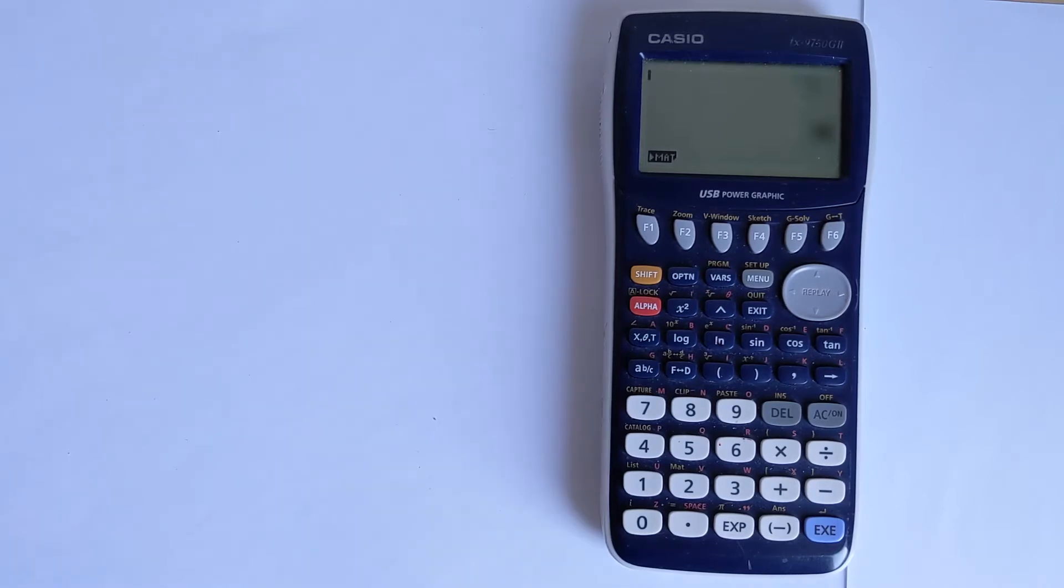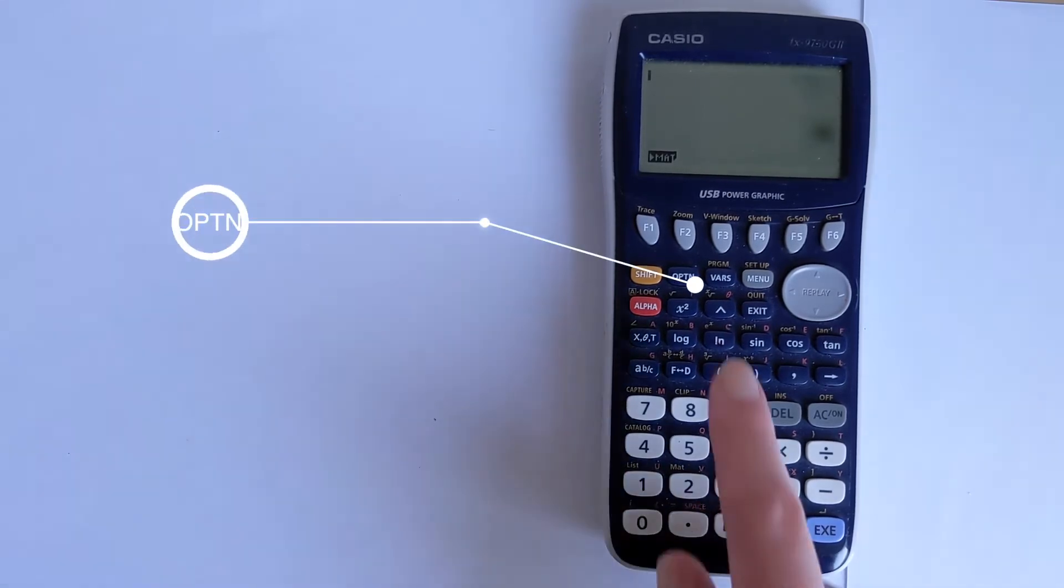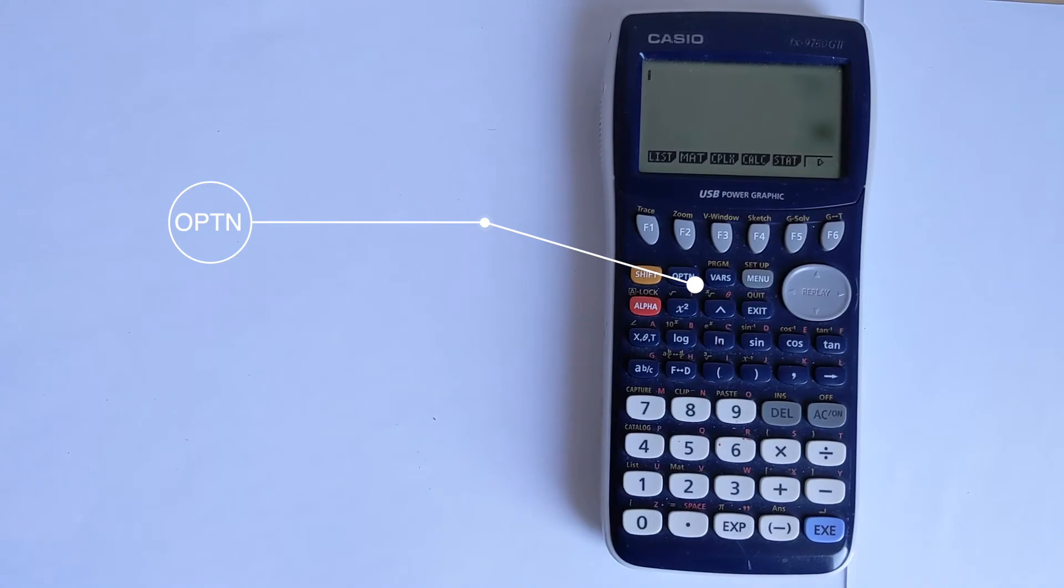Let's start this problem by finding the functions. The first thing you need to do is open up the option menu. If you press option here, this will bring up various options.